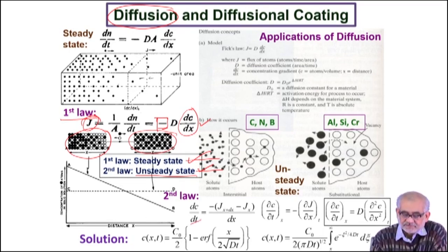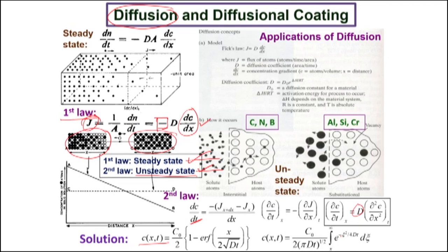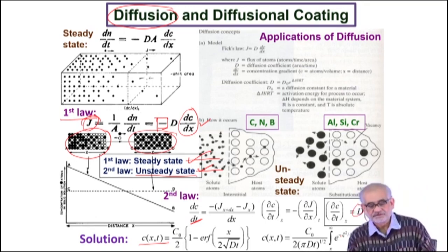In Fick's second law we bring in the time component. The compositional change as a function of time can be expressed as dC/dt proportional to the second derivative d²C/dx², where D is the diffusion coefficient. Under very specific boundary conditions we can find an error function solution for the composition profile as a function of distance x and time t. This allows us to find the concentration at a given distance or at a given time at a particular distance, and to determine the depth and profile of diffusion.